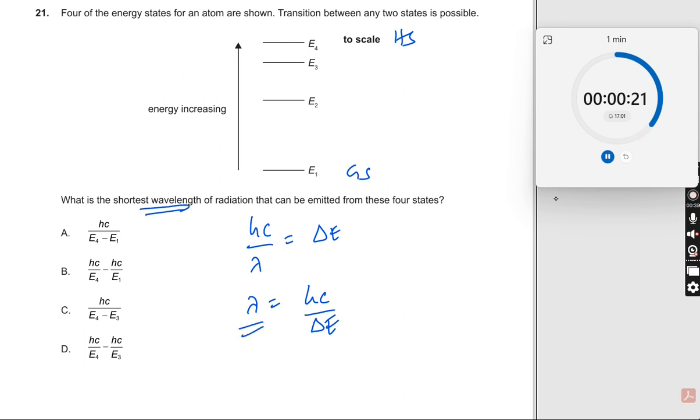Shortest wavelength is asked. So therefore, where do we have the largest delta E? What do you mean by delta E? Change in energy levels. It is observed between E4 and E1.